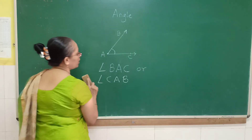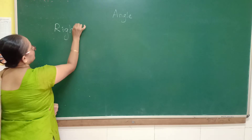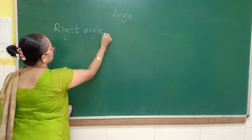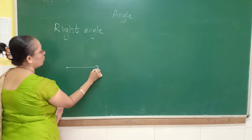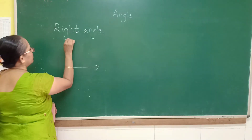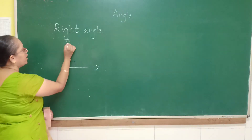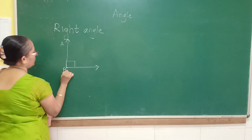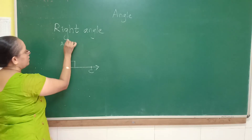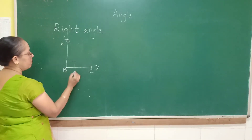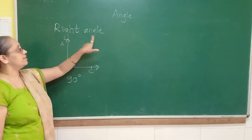Now let's see different types of angles. The first one is the right angle. I have again one common starting point, one ray going this way and another one straight. We mark the right angle by this symbol. The meaning of right angle is when two rays make an angle which measures 90 degrees.